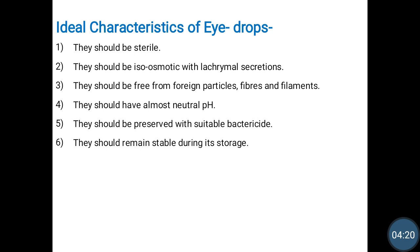Eye drops should have an almost neutral pH. The pH of tears is 7.4, so eye drops should have a pH within the range of 7 to 7.4. They should be preserved with a suitable bactericide to avoid microbial contamination. They should also remain stable during storage — both physically and chemically stable under the given storage conditions.